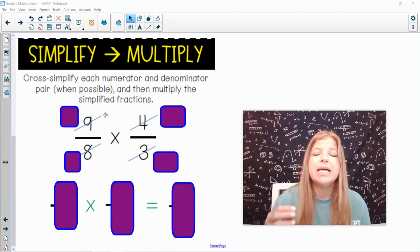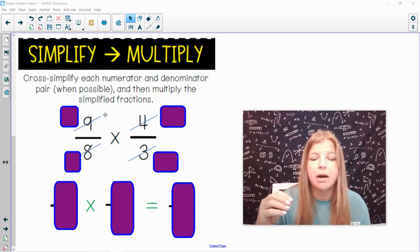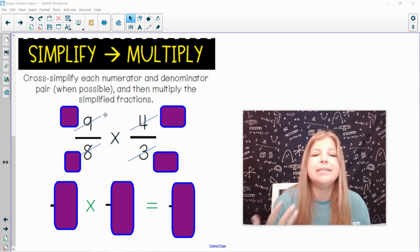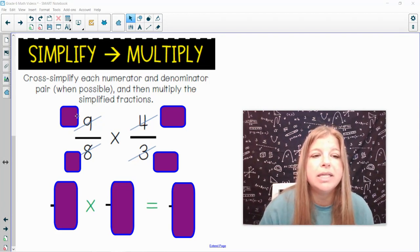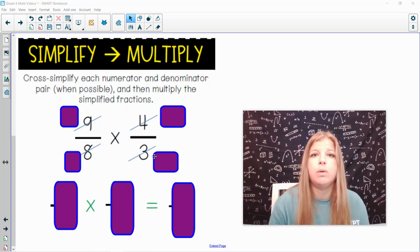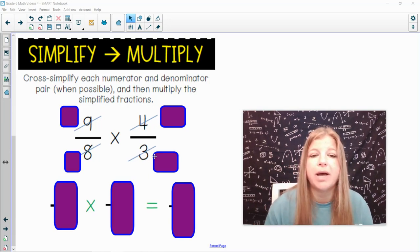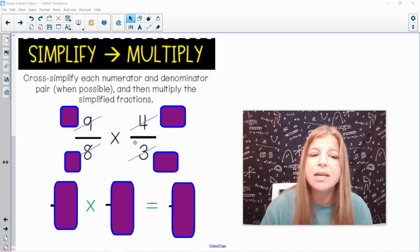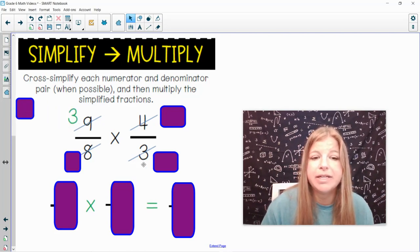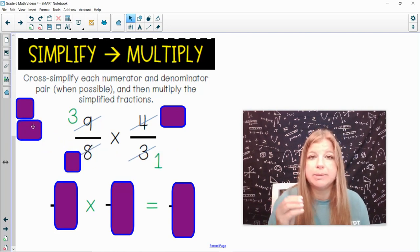But I could cross-simplify, and what cross-simplify means is find a numerator and denominator pair. They could be within the fraction themselves. They could be diagonal to each other, and see if you can simplify them. So for example, this numerator of 9 and this denominator of 3, I put lines through both of them, not to cross them out as if they don't exist anymore, but to really show that I'm simplifying the fraction of 9 over 3. 9 and 3 are both divisible by 3. So if I divide 9 by 3, it's going to become a 3, and if I divide 3 by 3, it would become a 1.